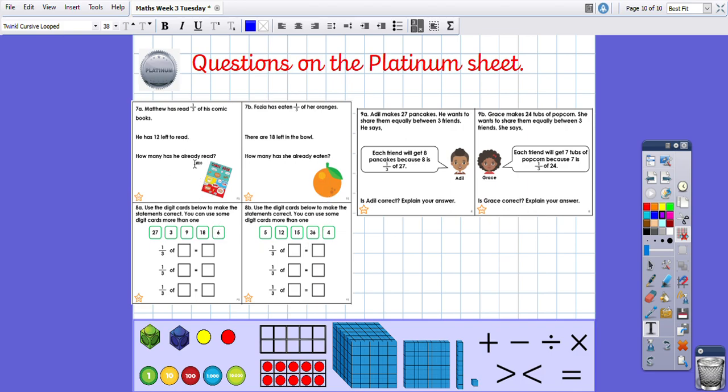And platinum, you have got Matthew who's read a third of his comic books and he's got 12 left to read. How many is already read? So these are quite tricky and it's the same with the oranges. Then you can use the digit cards to make the statements correct. You can use some of them twice if you need to. I would draw out pictures or do your working out to support you because that will really help. And then you've got to tell me whether the children are correct. So Adil makes 27 pancakes. He wants to share them equally between three friends. And then this is what he says. Is he correct? And the same with Grace. As always, if you are stuck with anything because today's work is quite tricky, you can email me or Miss Smith and we will help you as much as we can.